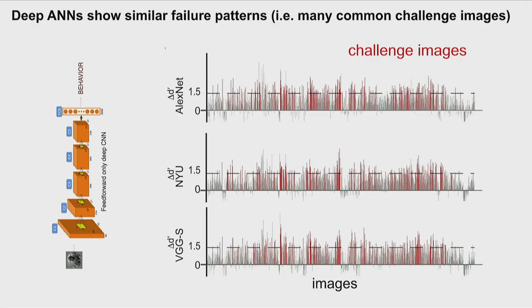Here's a bunch of computer vision systems at the time. Plotting in delta units — the delta between system and primate performance — numbers up here mean the system is doing worse than the primate. What I want you to see is that the red challenge images taken from AlexNet show very similar error patterns across AlexNet, an NYU system, and VGG. These errors are actually pretty strongly correlated across networks — it's not that AlexNet has particular errors and VGG has totally different ones.